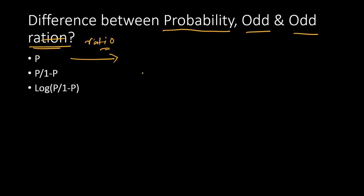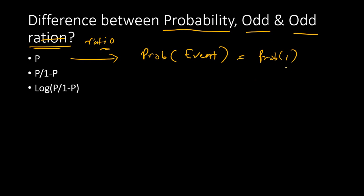Probability, in the context of logistic regression, is the probability of an event happening — the probability of the event given different information about the event. So when we denote it as 1 and 0, we say that probability of 1 is the probability of something happening. It could be probability of default or probability of churn. Default and churn are known as the event.